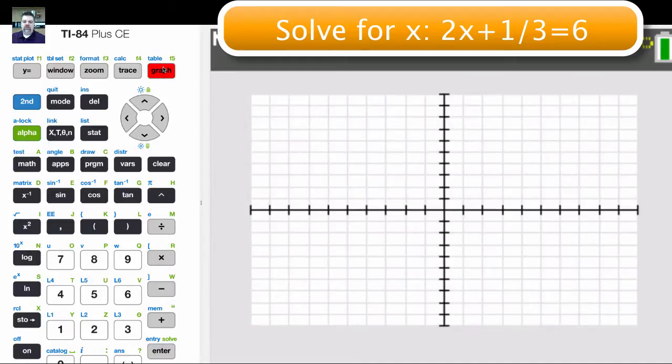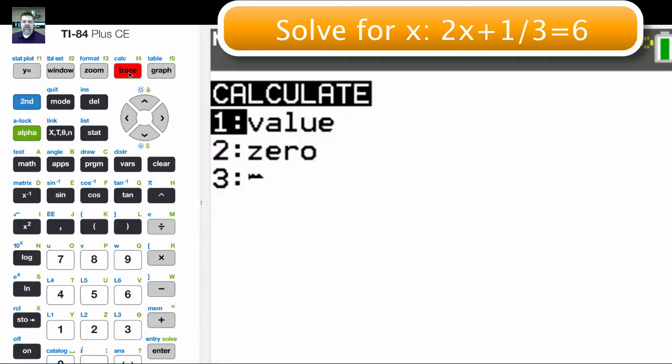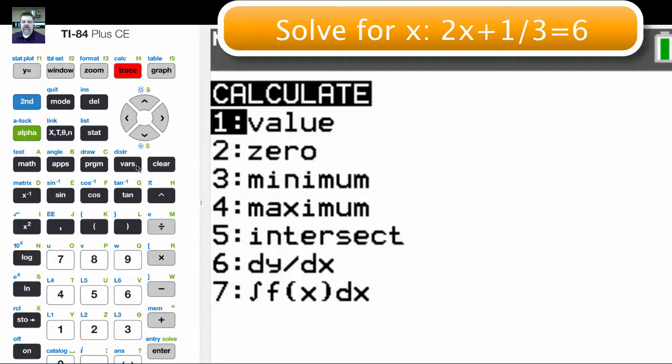Then you look at the graph and find the intersection of both those lines. Here you would hit second trace, find the intersection, which is option number 5,